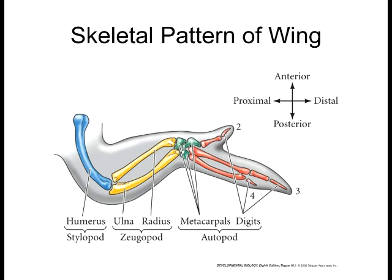When we look at limbs, one of the axes is proximal-distal. Proximal has to do with everything close to the body; distal is everything away from the body. So when you hear me talk about distal today, that's at the tip or end of the developing limb. Anterior-posterior: anterior is where your thumb is, posterior is where your pinky is. We're going to look at how the thumb forms in the anterior axis and how the pinky and the digits form in the posterior axis.